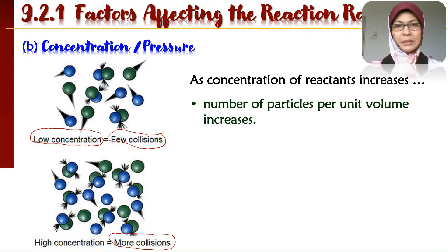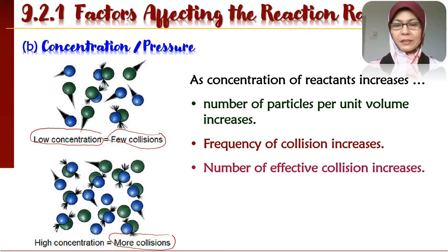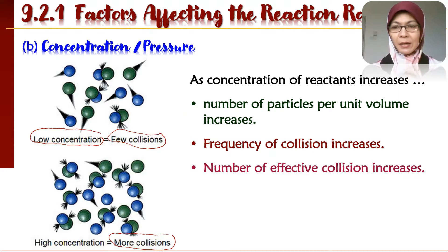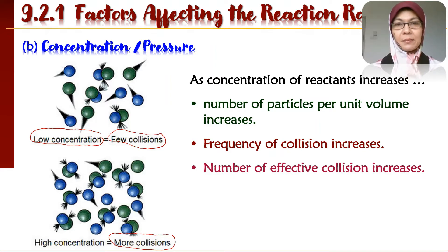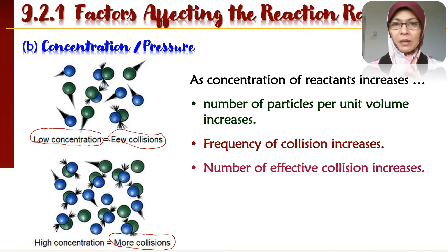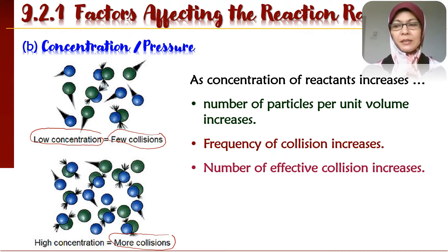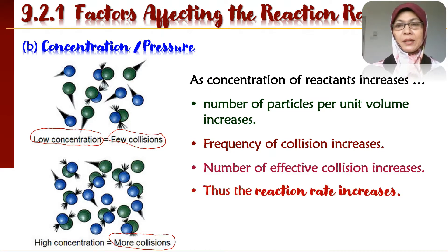Apabila perlanggaran bertambah, number of effective collision juga akan bertambah. Bilangan perlanggaran bertambah, bilangan perlanggaran berkesan juga akan bertambah. Perlanggaran berkesan ialah perlanggaran yang menghasilkan hasil tindak balas — the collision that produces product. Itu adalah effective collision. Apabila banyak perlanggaran berlaku, maka number of effective collision juga increase, dan reaction rate pun akan increase.